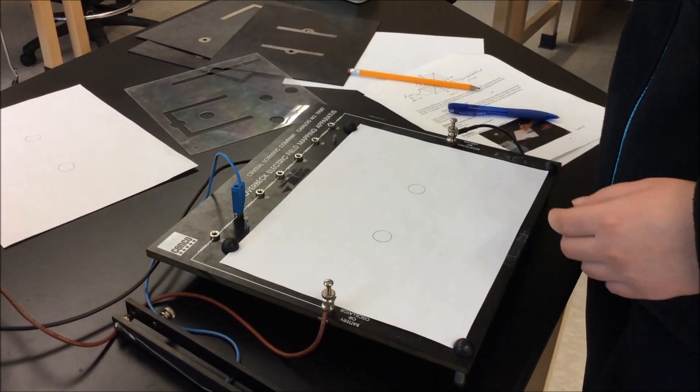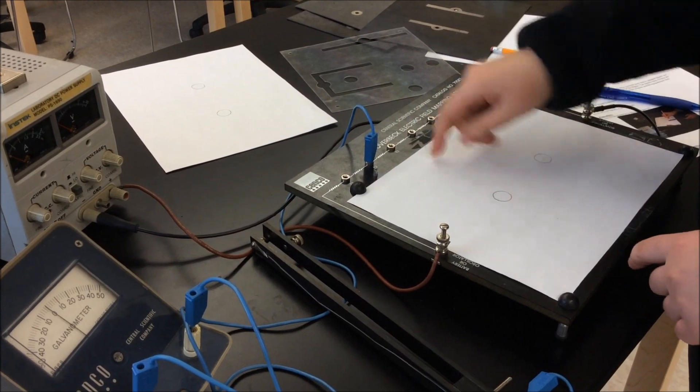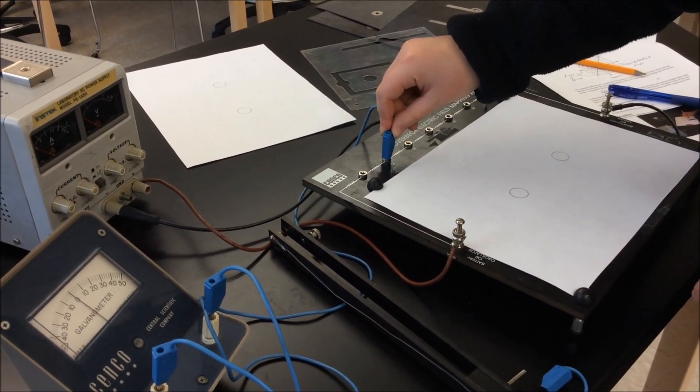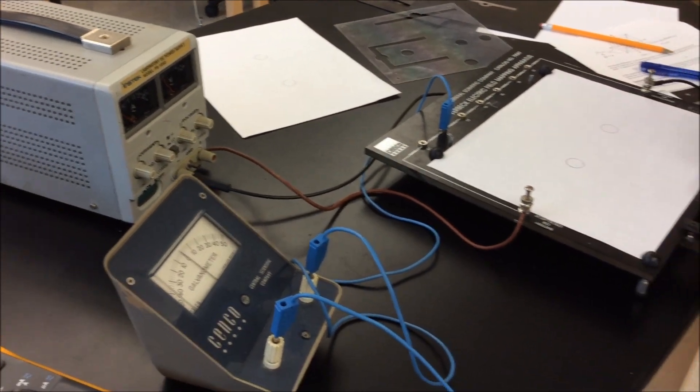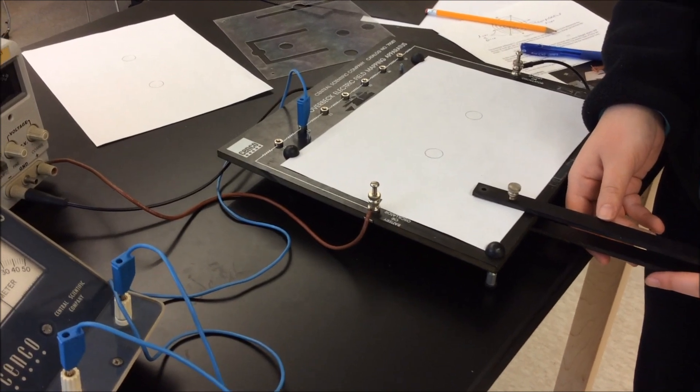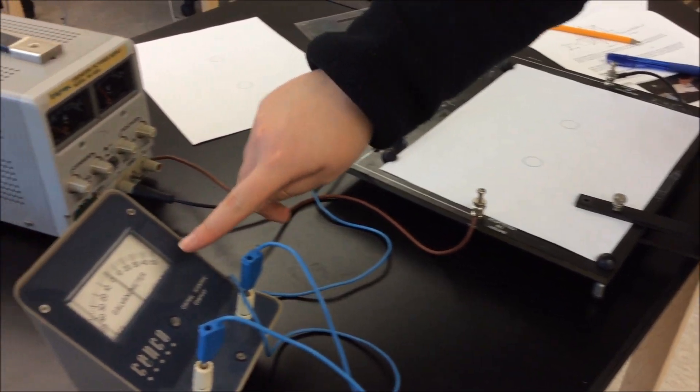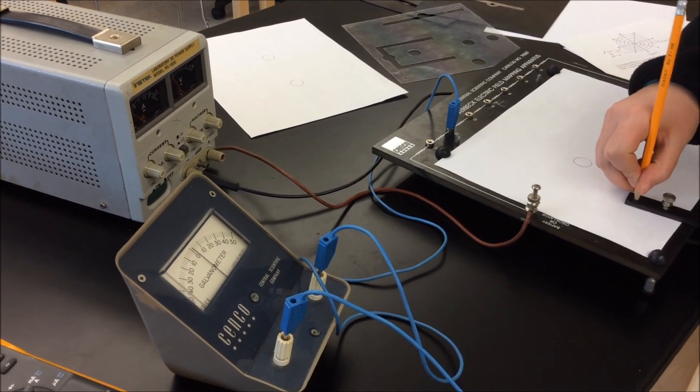Once you do that, you're going to make sure that the wire connecting the galvanometer to the mapping apparatus is set on E2. Next, you're going to turn on the power supply and start searching for points that have the same electric potential. You can see this when the reading on the galvanometer is zero, and you're going to simply plot the points.